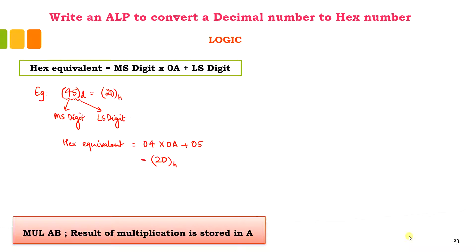Here you can see we are performing the multiplication operation, so we will be using the opcode MUL A, B and the result of multiplication will always be stored in the accumulator. When considering the MS digit and the LS digit, we have to use masking and also perform the swapping operation to separately consider the lower nibble and the upper nibble. Since we want separately the lower digit and the MS digit, first we consider the number 45 and want only the MS digit, which should be 04.